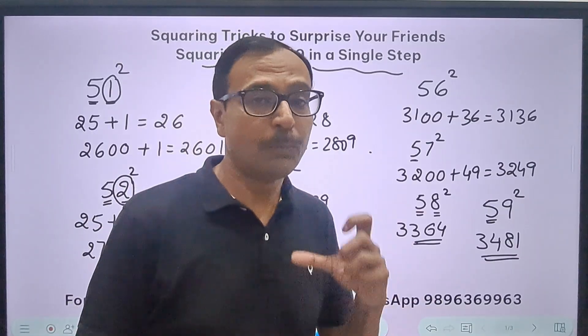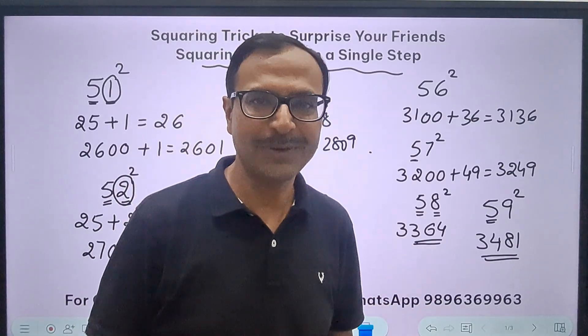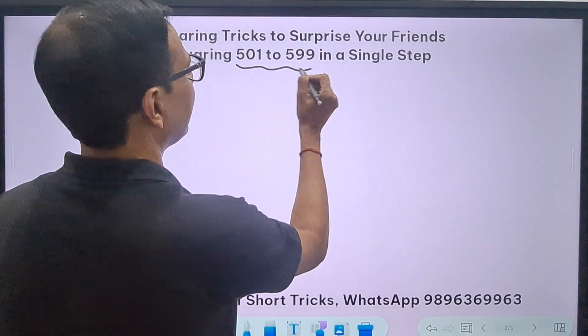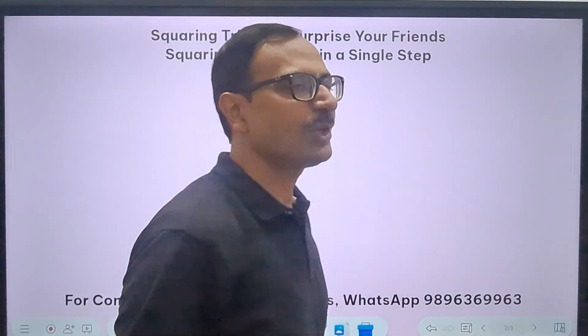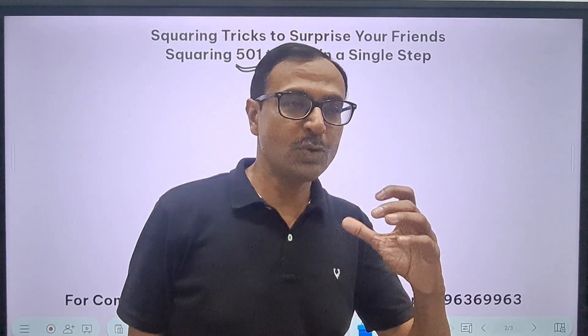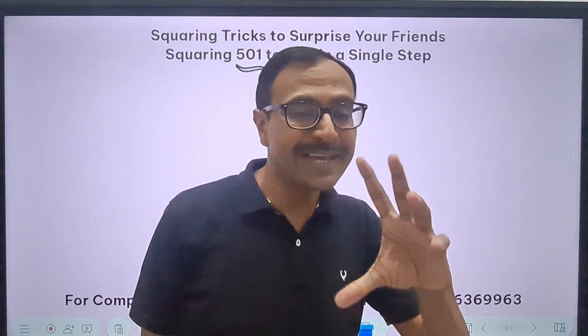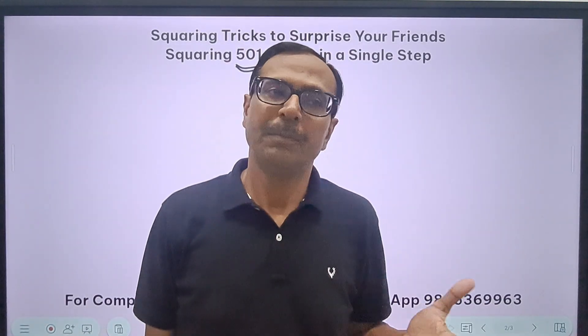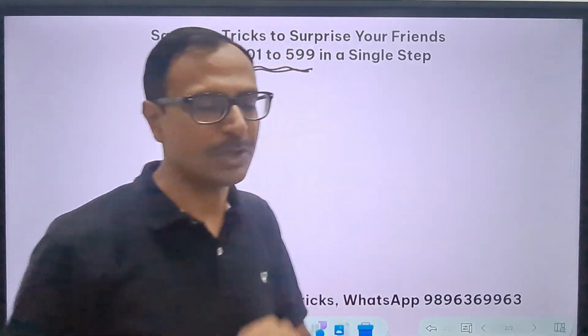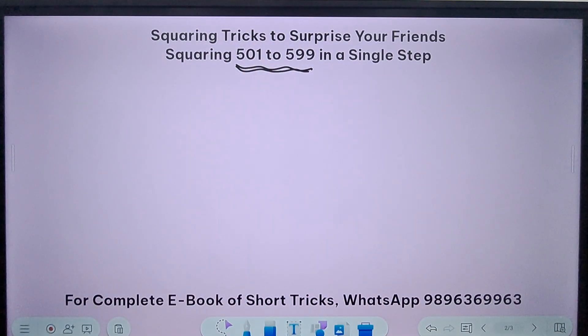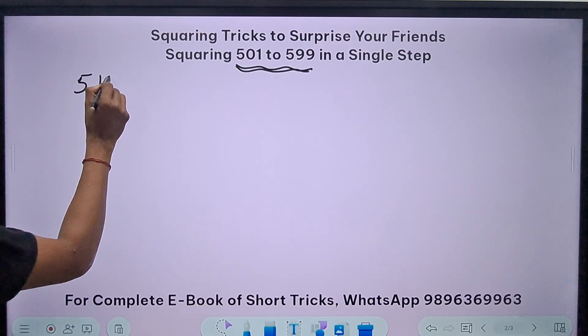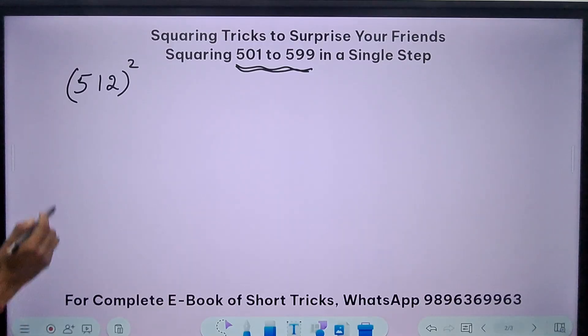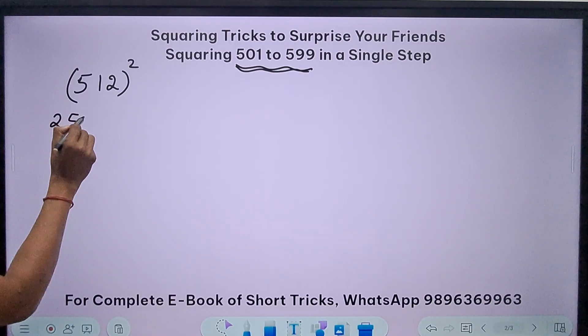And I am sure if you know the method you feel more confident. So let's move on and now take up numbers from 501 to 599. So in the first question you will see that I'll consume maybe one minute or one and a half minutes to explain the concept to you, but in the last question which I will take up, I'll do it virtually in maybe a single line. Let's take a number like 512 and let's try to find the square of this number.